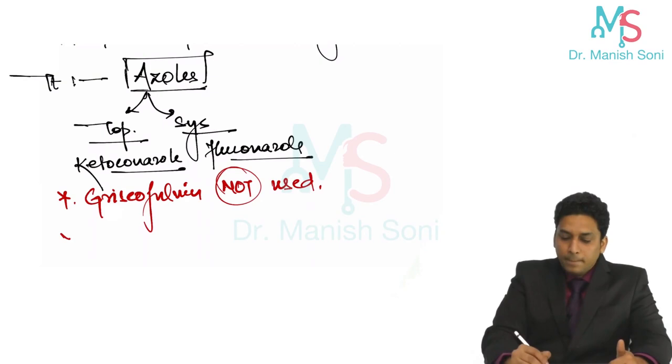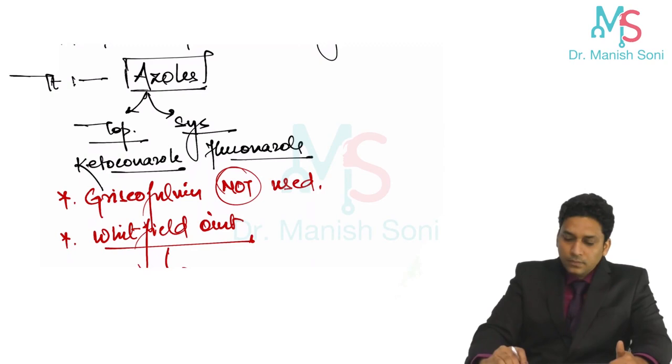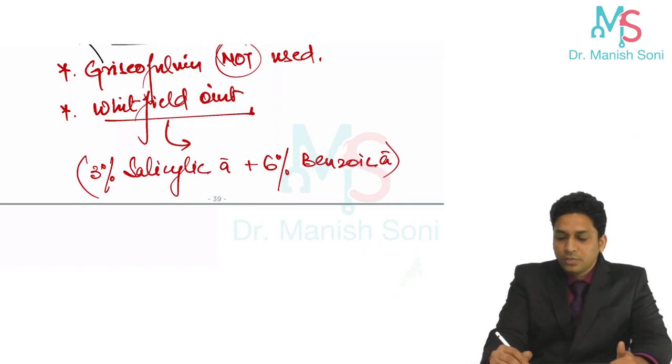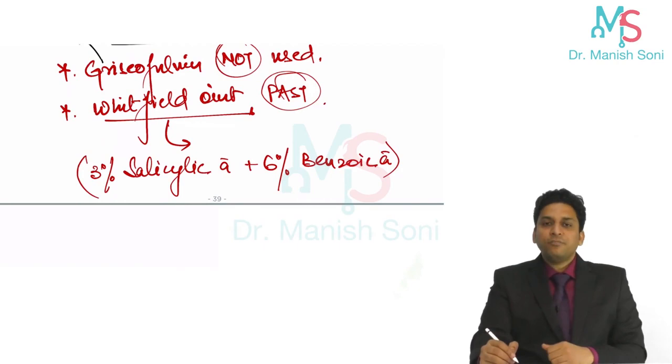In the past, we used one more agent known as Whitfield ointment. This Whitfield ointment is a combination. Whitfield ointment is a combination of 3% salicylic acid and 6% benzoic acid. This agent is no longer used. It was used in the past. This is old treatment. Old treatment of pityriasis versicolor was Whitfield ointment. Whitfield ointment is a combination of 3% salicylic acid and 6% benzoic acid.